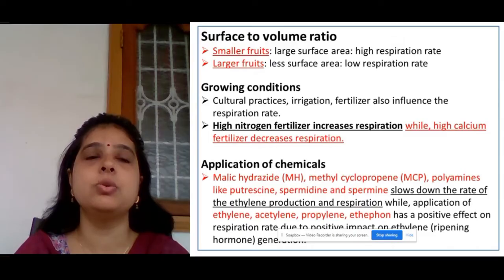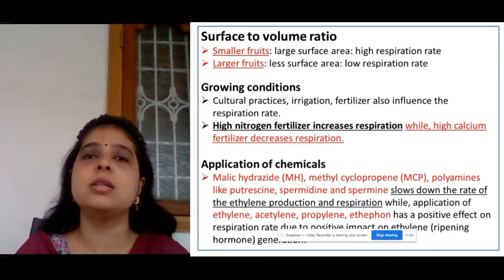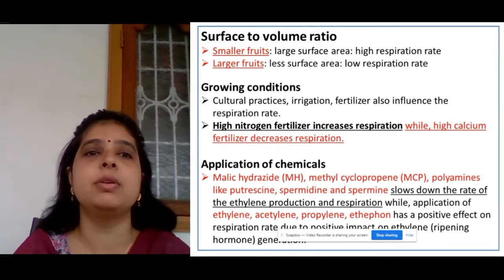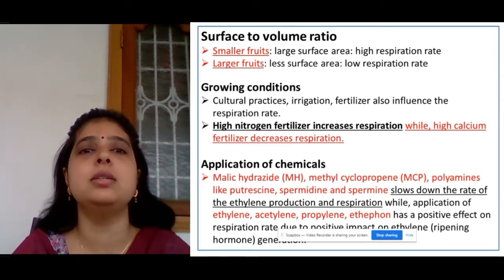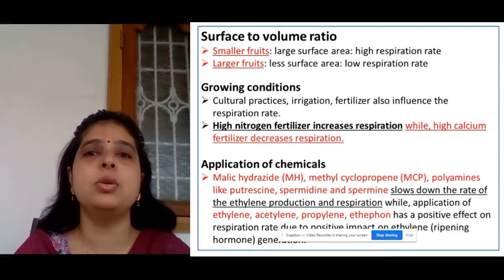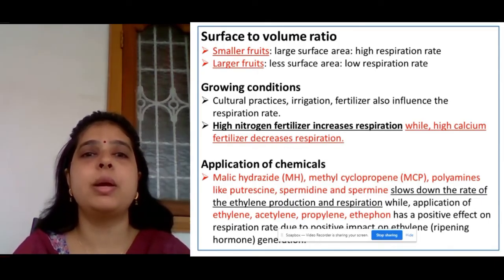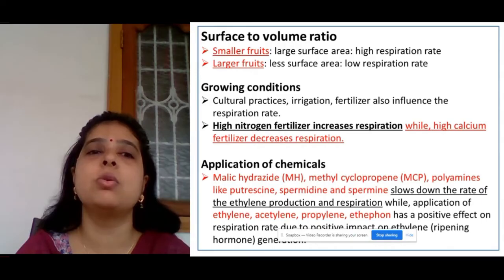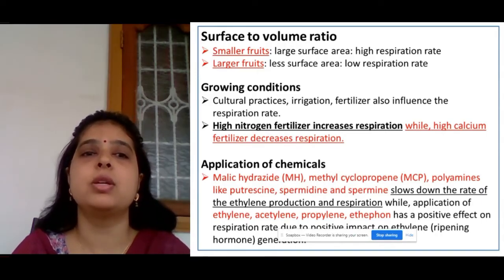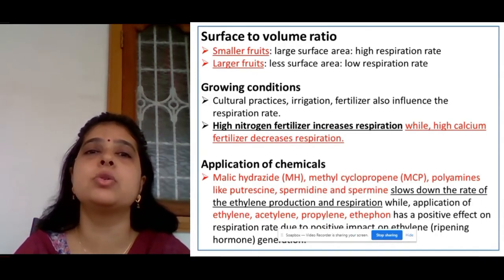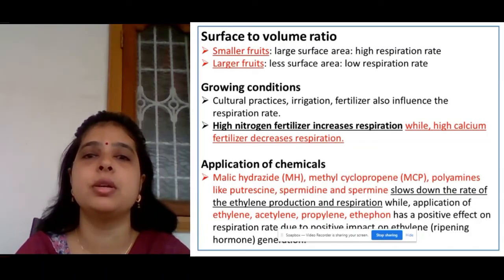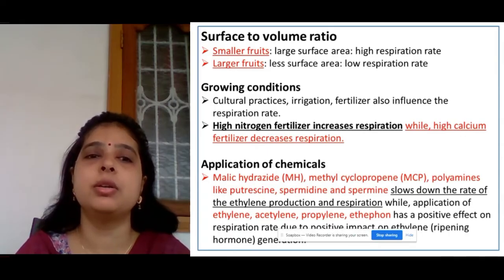Surface-to-volume ratio also matters: the smaller the fruit, the larger the surface area relative to volume, so the higher the respiration rate. When the size of the fruit is larger, less relative surface area results in a lower respiration rate. Growing conditions such as cultural practices, irrigation, and fertilizer also determine respiration rate. For example, high nitrogen fertilizer increases the respiration rate, while calcium fertilizer decreases it.